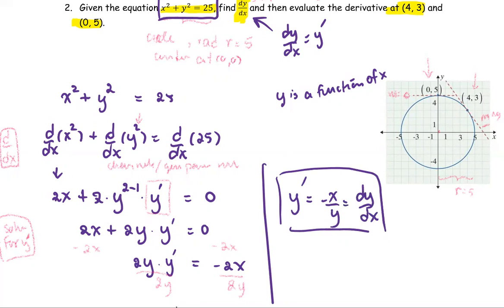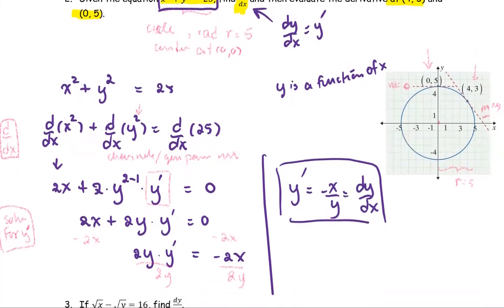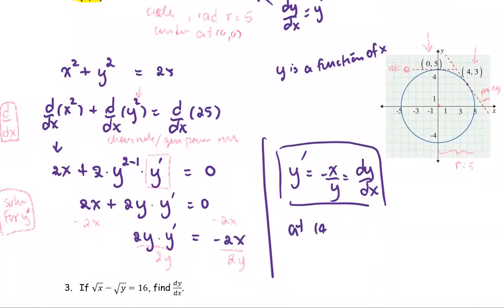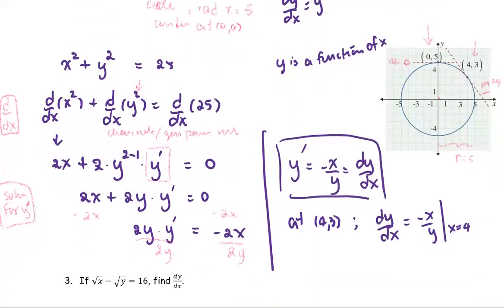That gives us y prime equals negative x over y. This is the expression for dy/dx for any x and y. Now we're going to find dy/dx at the ordered pair (4, 3). At the ordered pair (4, 3), dy/dx equals negative x over y. Replace x with 4 and y with 3, which gives us negative 4 over 3. So the slope of the tangent line at the point (4, 3) is -4/3.